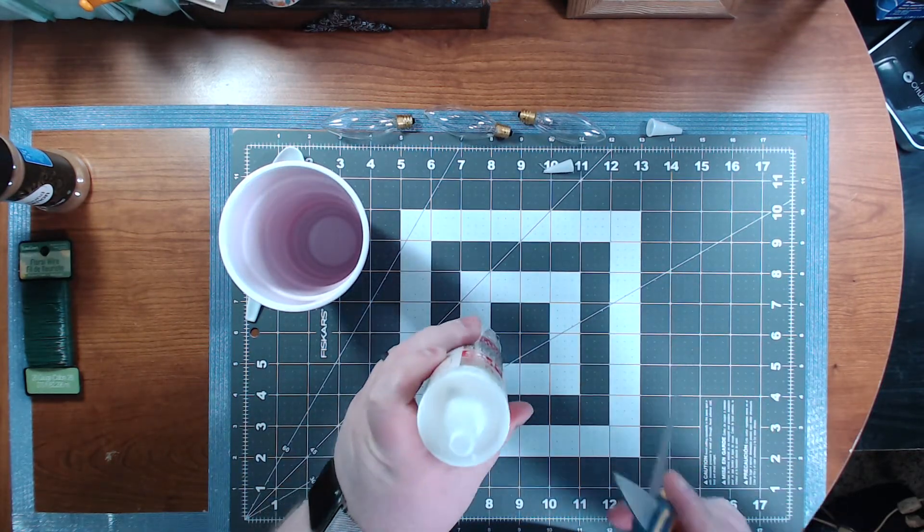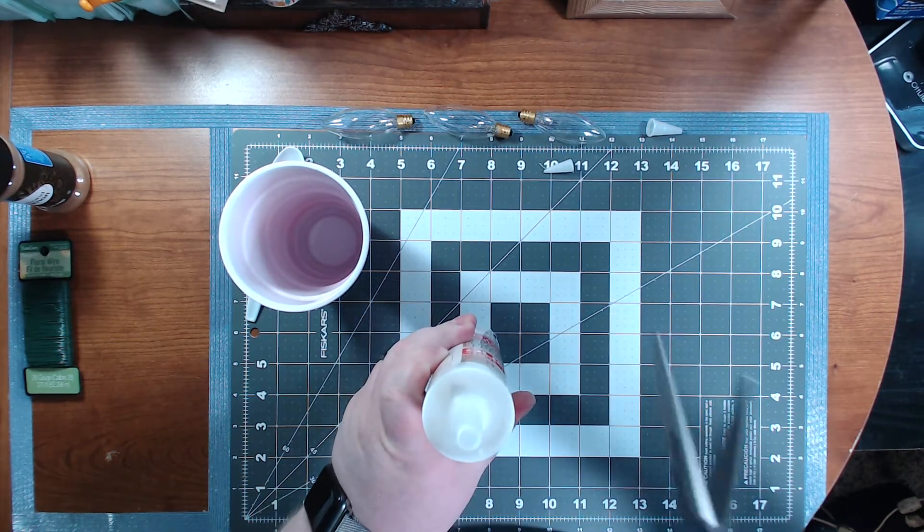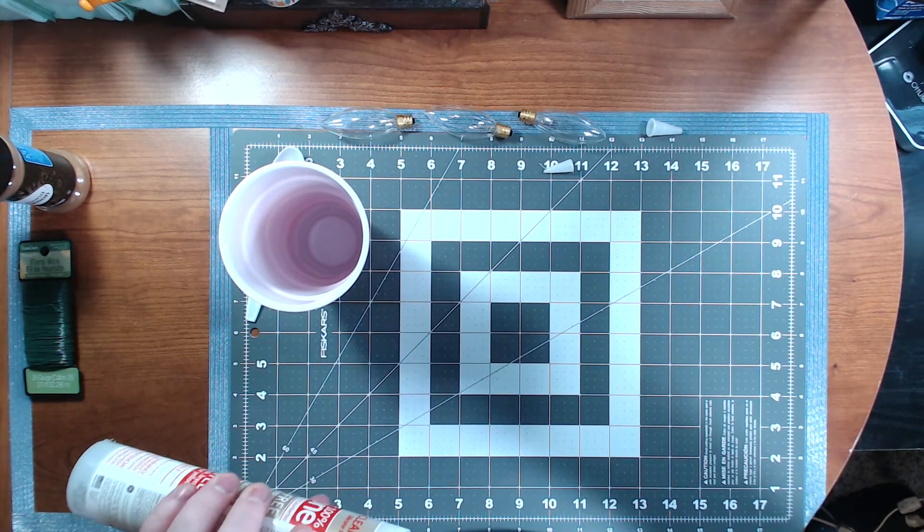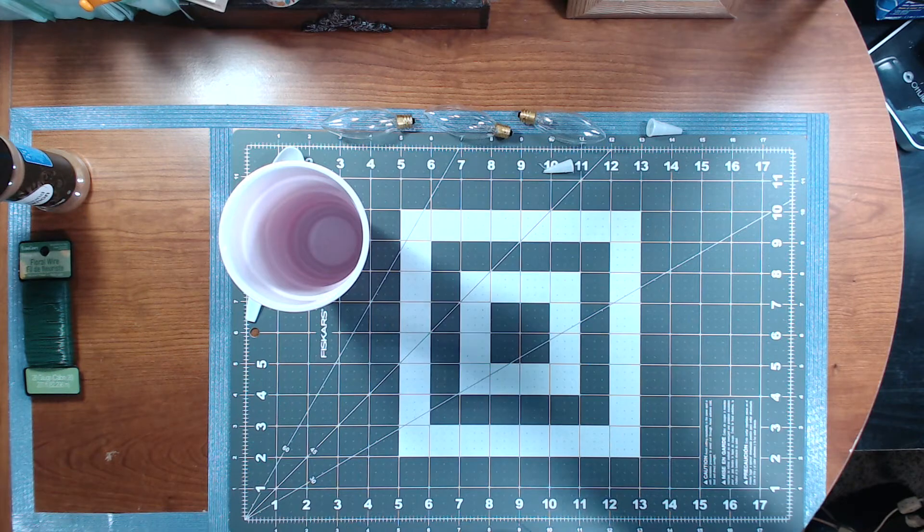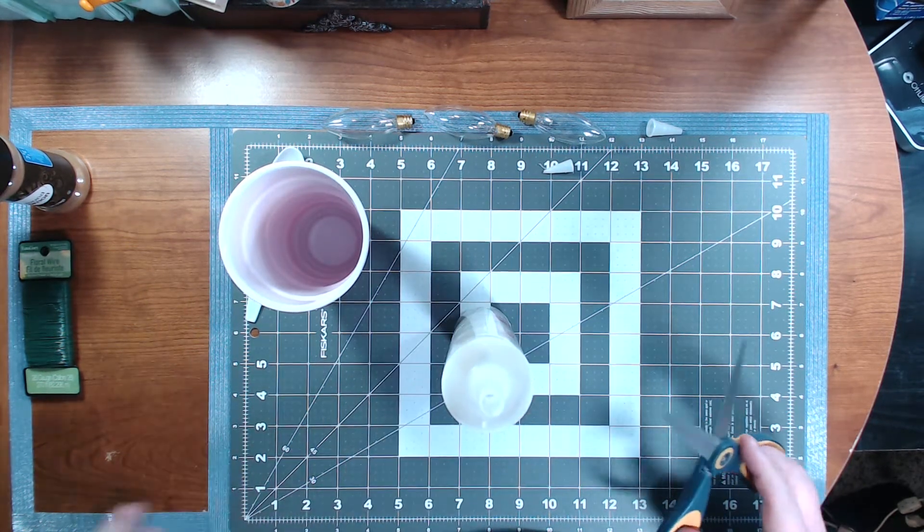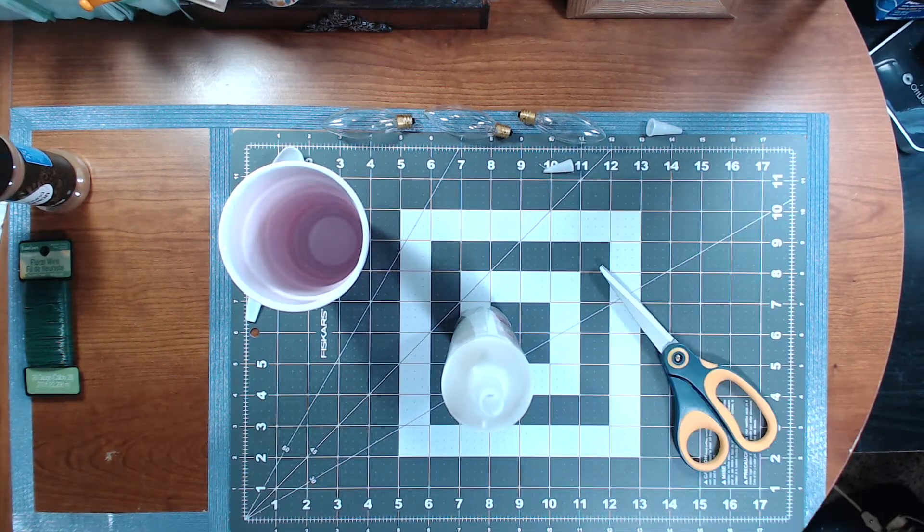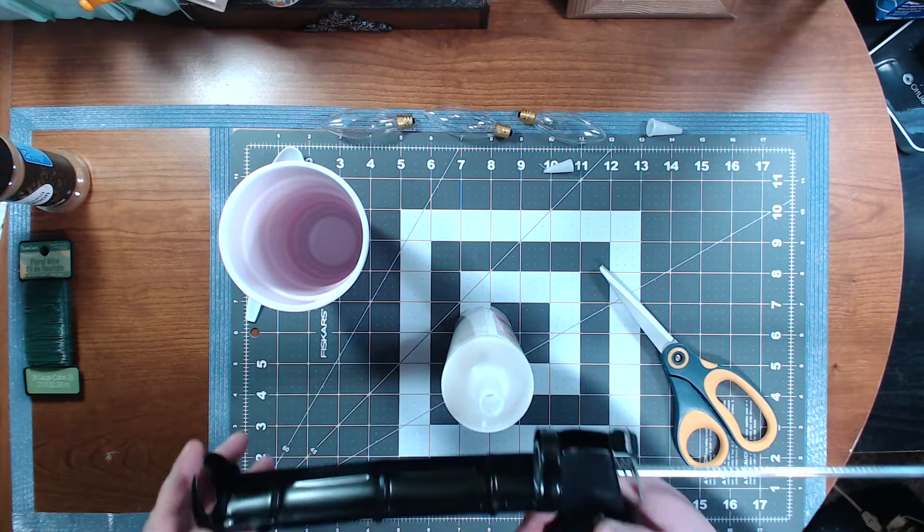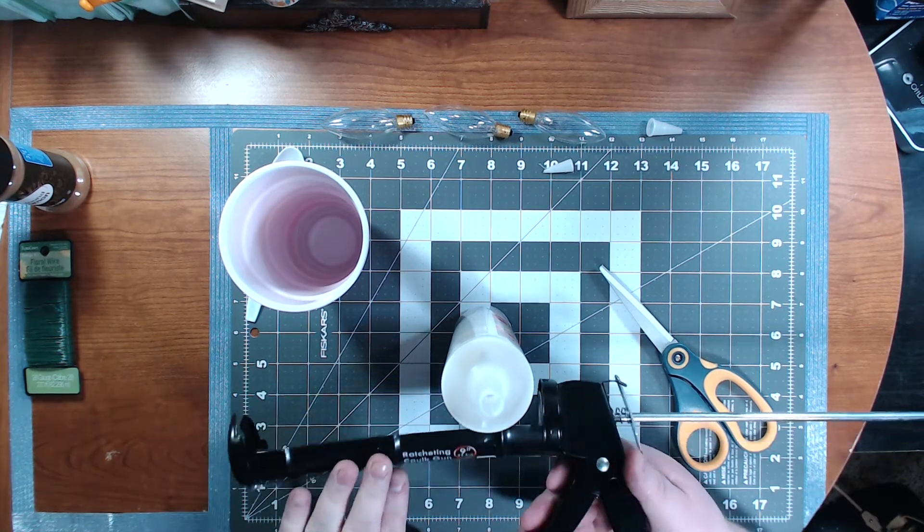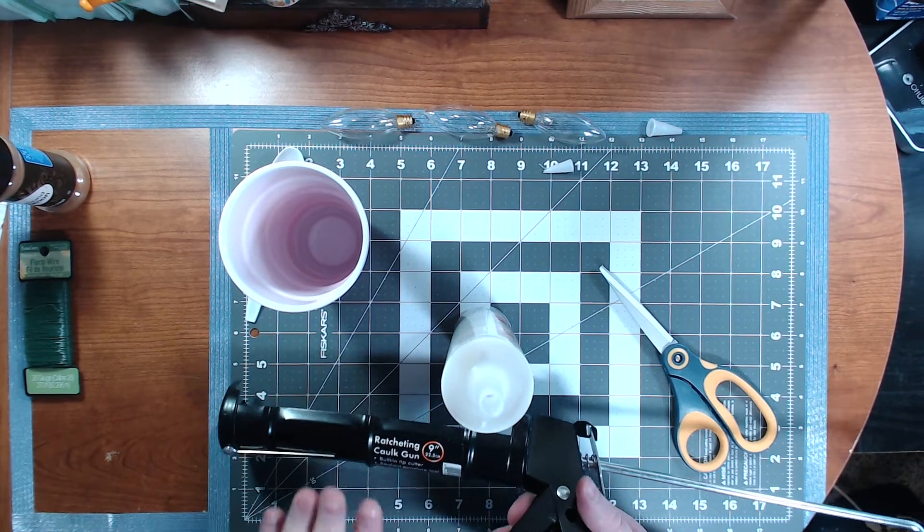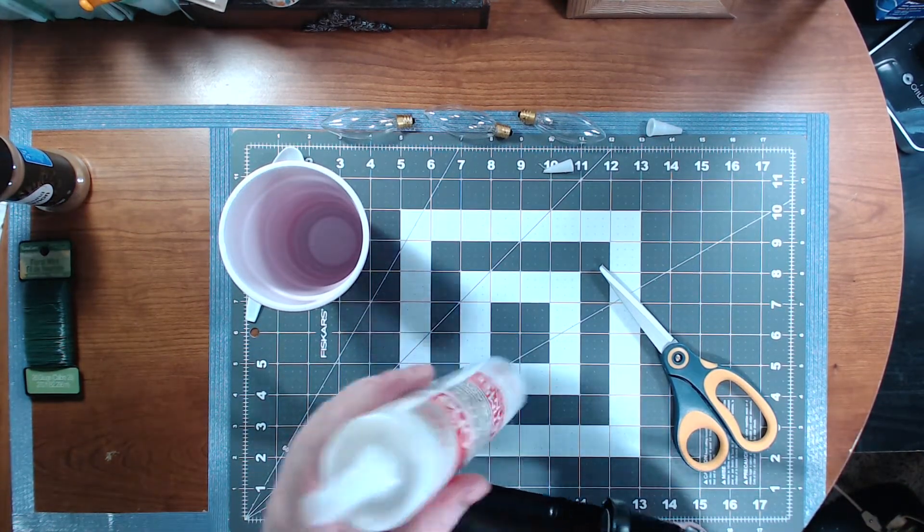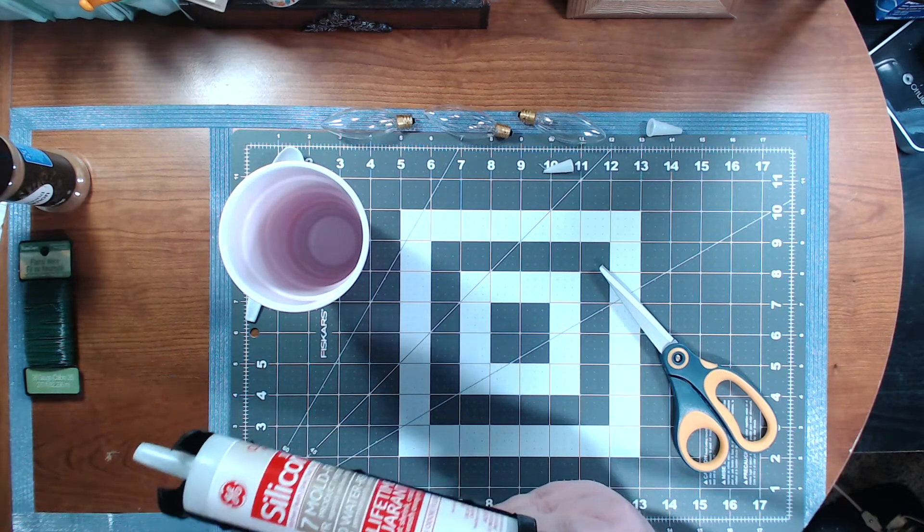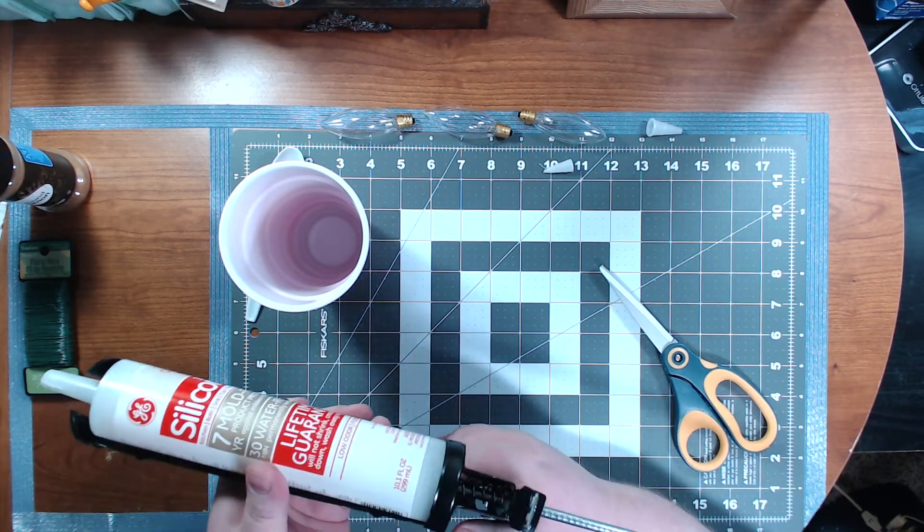So we're going to open it. I believe it's got a cap like that, and you just cut the tip off here like so. There is a seal inside of here which you can just take your scissors and puncture it.